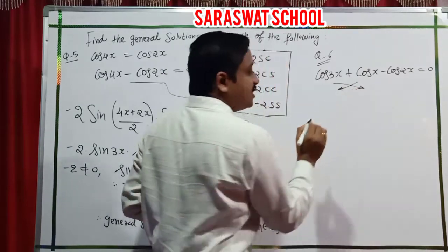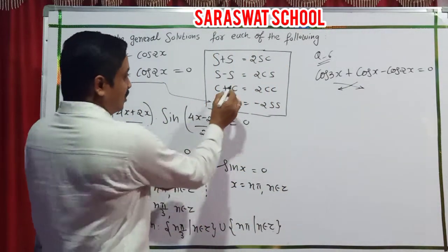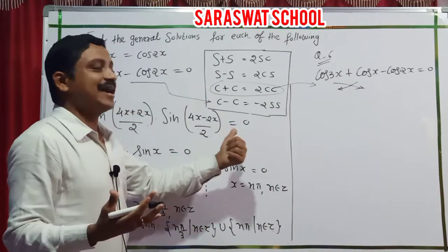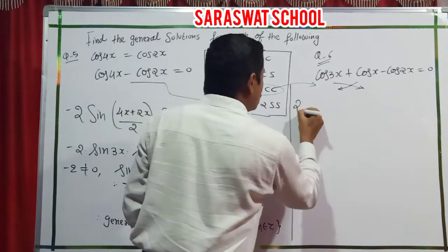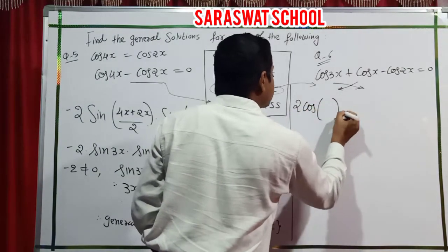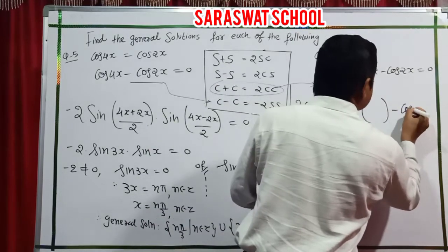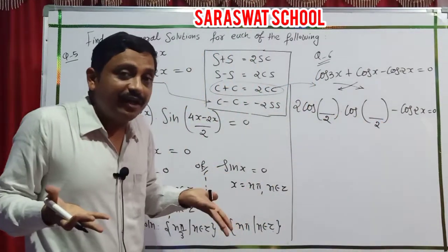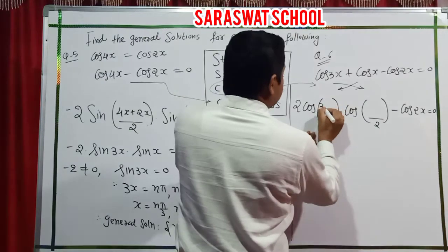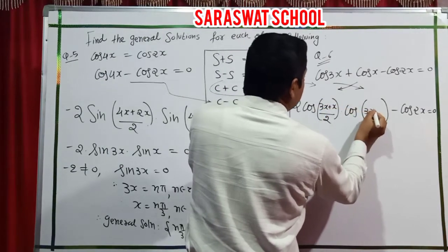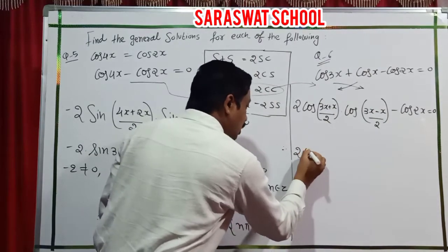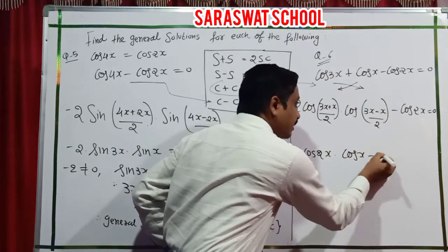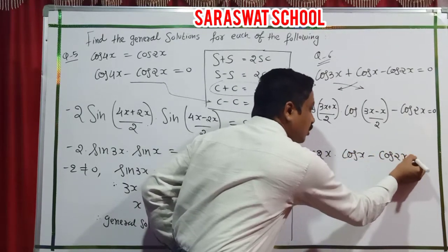C plus C gives 2 cos cos. Adding both angles: (3x plus x)/2 equals 2x. Subtracting: (3x minus x)/2 equals x. So we get: 2 cos 2x times cos x, minus cos 2x equals 0. Taking cos 2x as common: cos 2x times (2 cos x minus 1) equals 0.